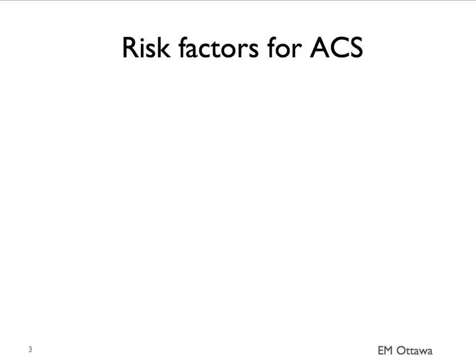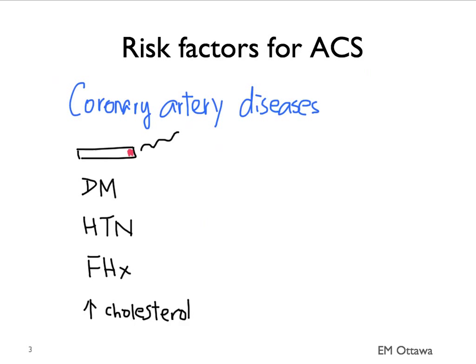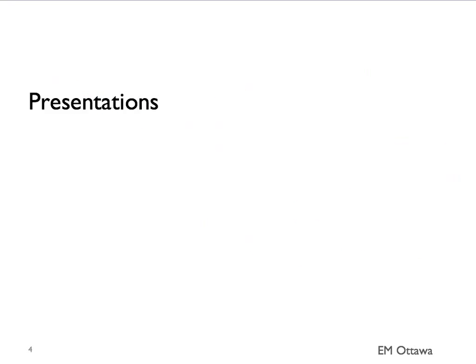There are some main risk factors for developing acute coronary syndrome. These are the risk factors for developing coronary artery disease in general. They include smoking, diabetes, hypertension, family history of coronary artery disease — particularly if younger people are affected — and high cholesterol. Even though the risk factors increase the chance of coronary artery disease, you do not need to have any of these risk factors to have an acute coronary syndrome. This is important.